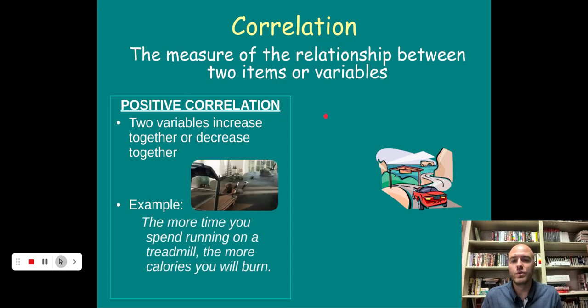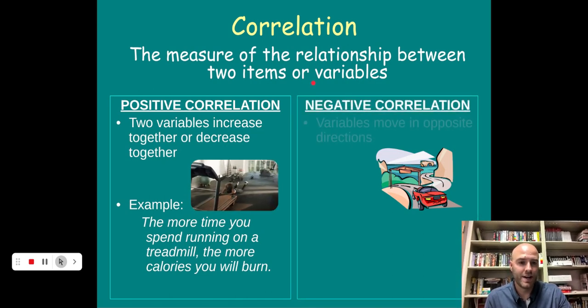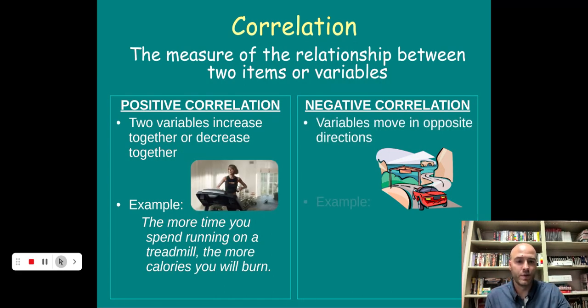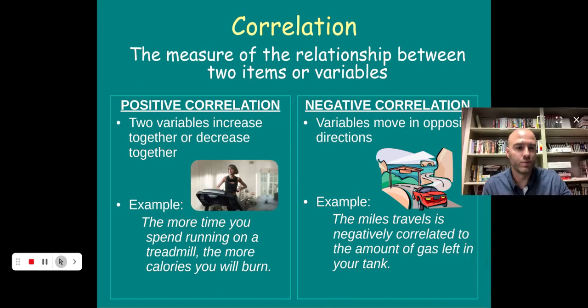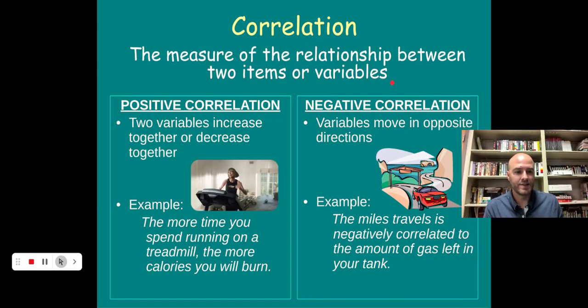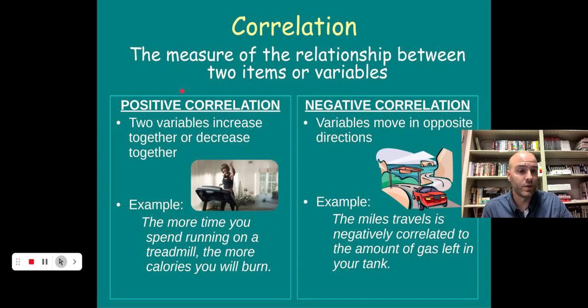So an example of that would be the more time you spend running on a treadmill, the more calories you'll burn. So as that time on treadmill increases, the amount of calories you're burning also increases. So it's positively correlated because the two are moving together. On the flip side, negative correlation is going to be the opposite of that. Variables move in opposite directions. The miles you travel, as you travel more miles, that's going to be negatively correlated with the amount of gas that you have left in your tank.